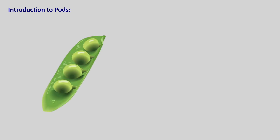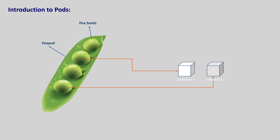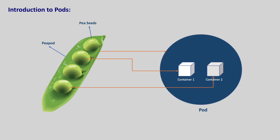Do you know what a pod is in general? The shell around pea seeds is called a pod. So a pod is something like a shell or case around a group of similar things. We can compare our Kubernetes pods to this - the pea seeds can be compared to containers and the pea pod can be compared to our Kubernetes pod.